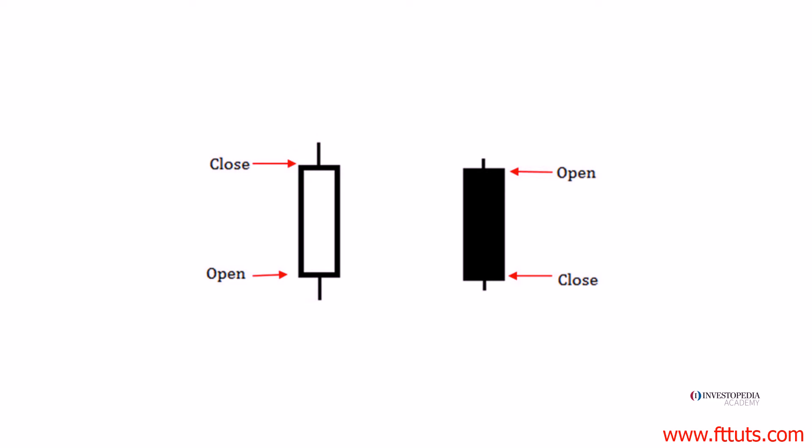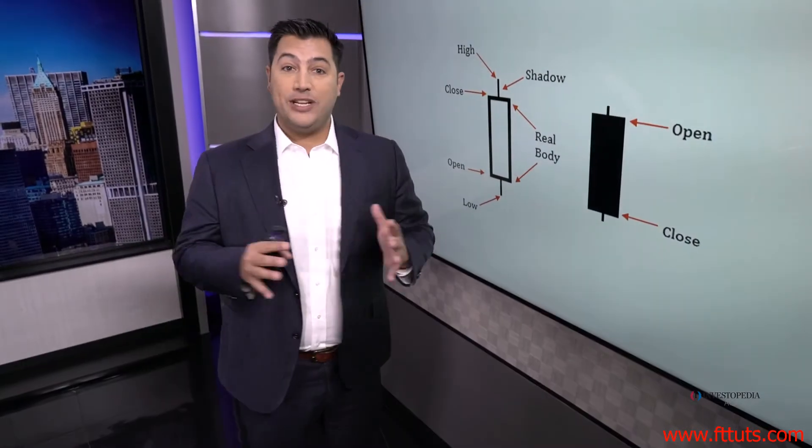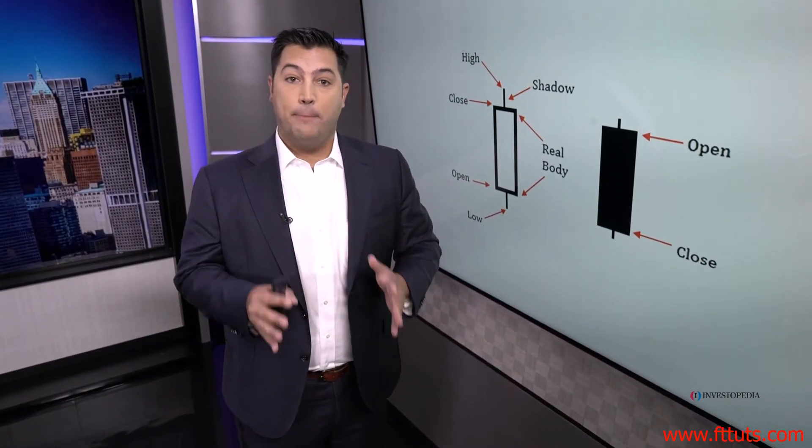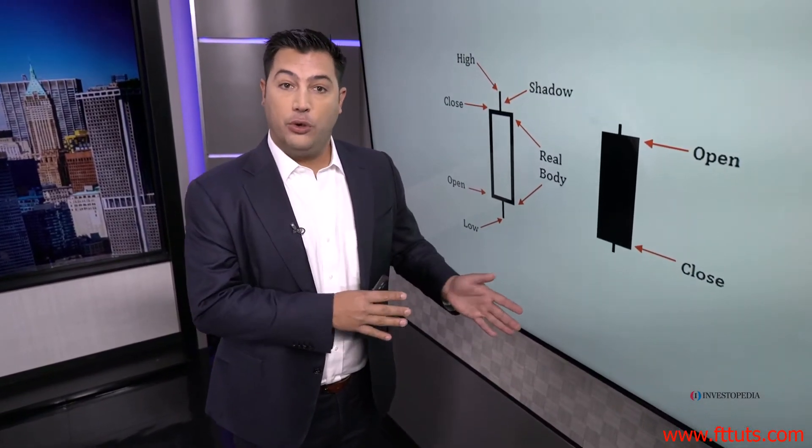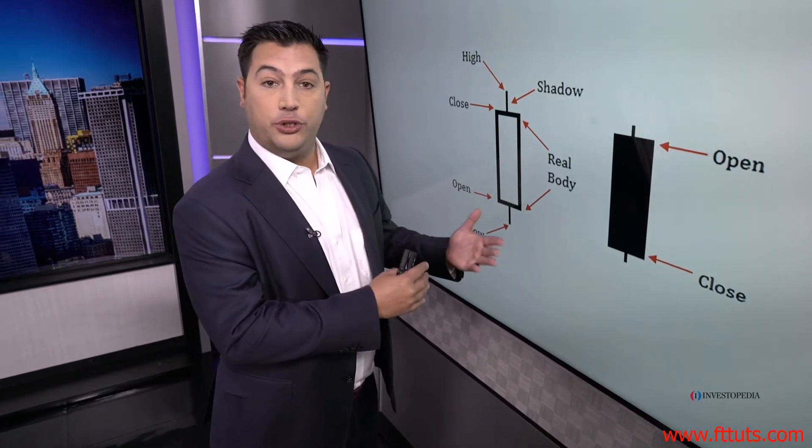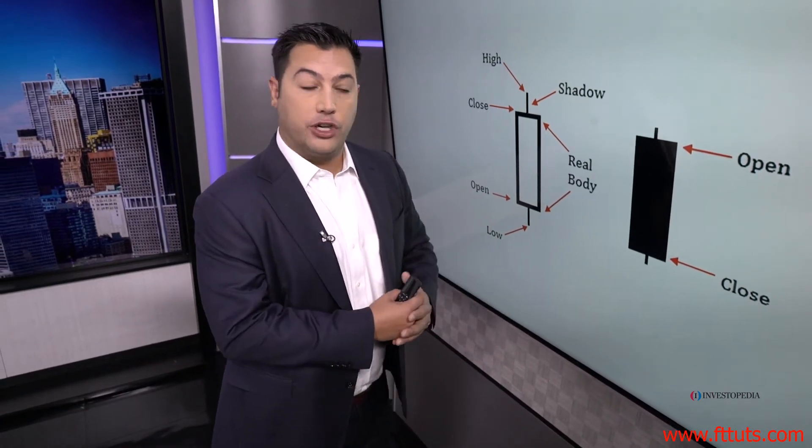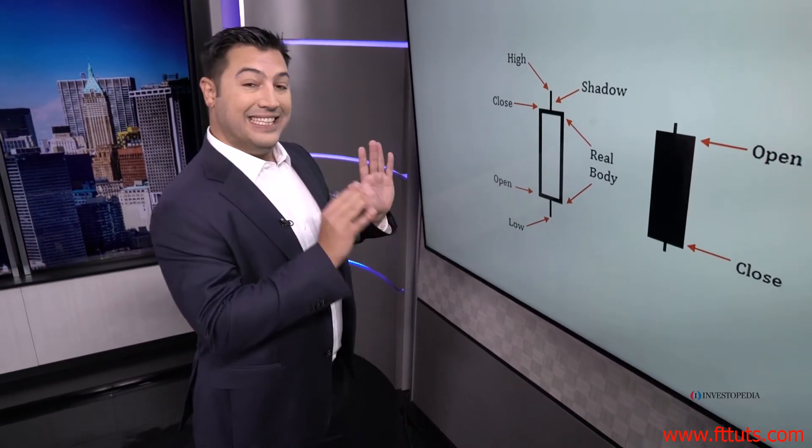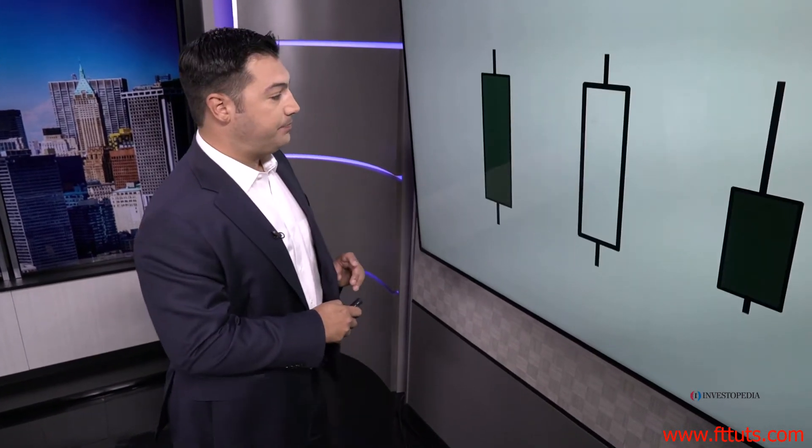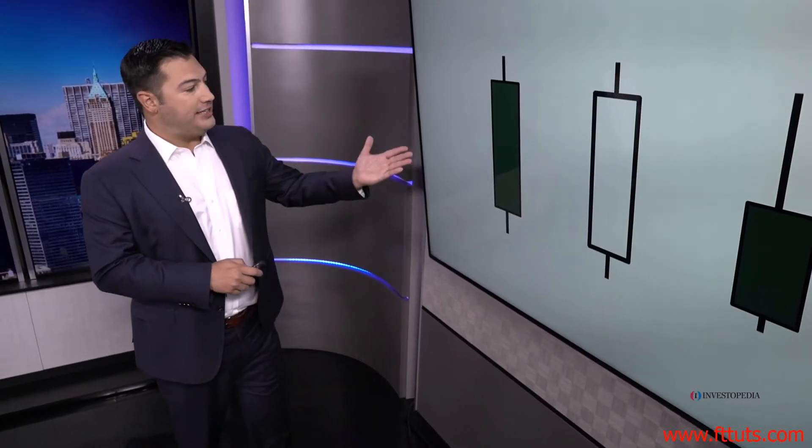So hollow candle, we have the close above the open, and a filled candle, the close below the open. Whether it's up or down on that given day based on the prior period's close is irrelevant when it comes to the hollow and the filled construction of the candlestick. This is only to do with the period that we're discussing.